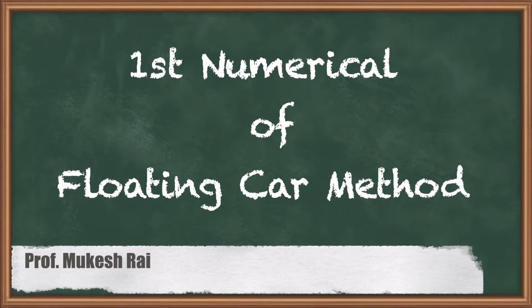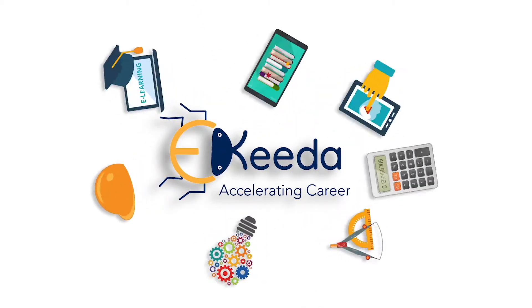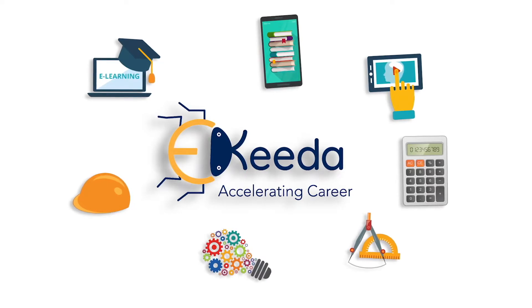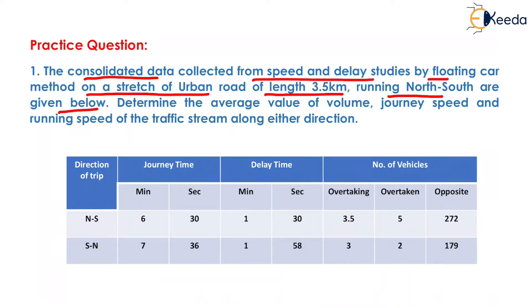Hello students, today we are going to solve the first numerical of the floating car method. The question is: consolidated data collected from a speed and delay study by floating car method on a stretch of urban road of length 3.5 km running north-south are given below. Determine the average value of volume, journey speed, and running speed of the traffic stream along either direction.